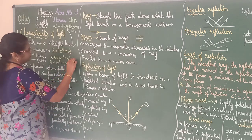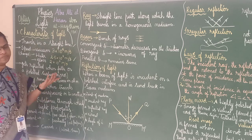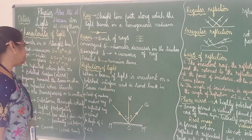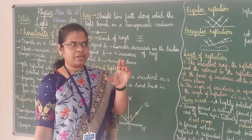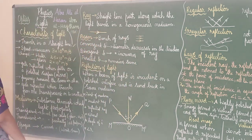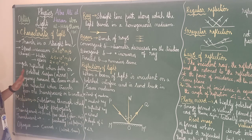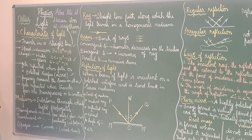Third point about light: it gets reflected when it falls on a polished surface. When light falls on a polished surface, it immediately gets reflected. For example, on a mirror — if you keep a mirror and light falls on it, reflection occurs. The frequency of light remains the same in all mediums. Find out the definition for frequency and write it down.